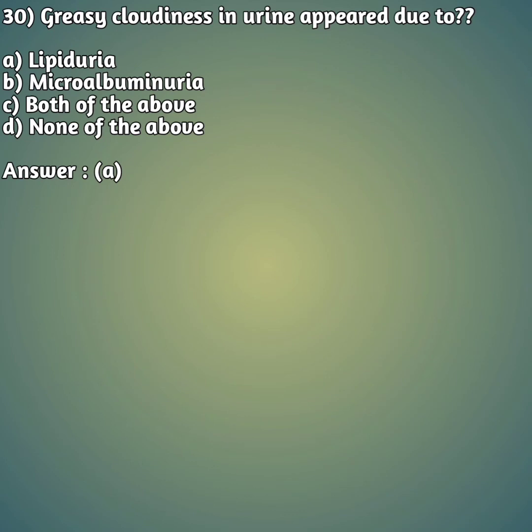Question 30: Greasy cloudiness in urine appears due to — when we examine the physical appearance of urine, if we find greasy cloudiness, it is because of — option A: lipiduria, option B: microalbuminuria, option C: both, option D: none. The right answer is option A, lipiduria. Excess lipid in urine can be seen as greasy cloudiness on physical examination.